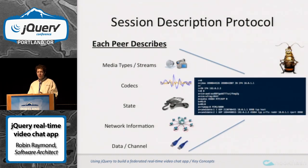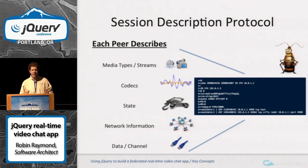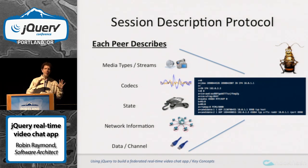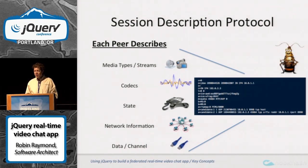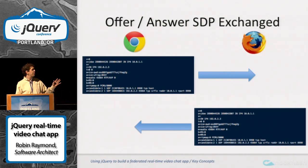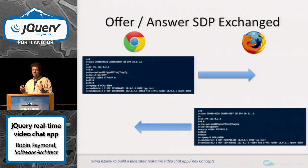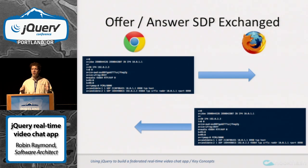In WebRTC, each peer is required to describe all of their capabilities. They package it all up into something called SDP. It's a really ugly, horrifically bad thing, but you can probably just treat it as a blob data type. It comes from the legacy days of telephony, and hopefully that'll go away eventually. Browser A needs to send what they want to browser B — that's called the offer. Then browser B has to send what they want to browser A — that's called the answer. This is the offer-answer SDP exchange.